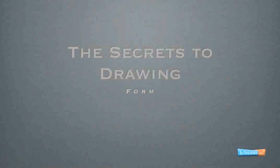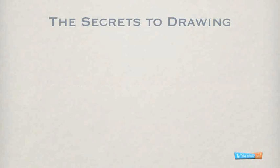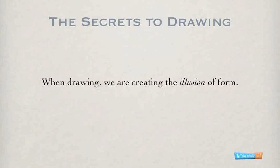Welcome to the third video in the Secrets to Drawing video course. In this video we're going to talk about the next element of art: form. Let's define what form means. In terms of art, form is a three-dimensional object. We exist in a world full of forms. It's important for us to understand that when we are creating drawings, we are creating an illusion — specifically, the illusion of form.